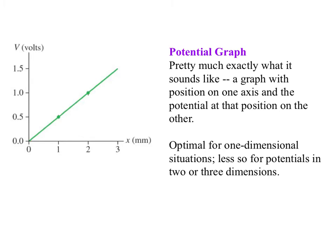A potential graph is pretty much exactly what it sounds like. It's a graph where the position's on one axis and the potential at that position is on the other. These are optimal for one-dimensional cases, like we just had, and less so for potentials in which there are two or three dimensions. Although you could imagine with a two-dimensional potential, if you had variance in x and y, then you could imagine a two-dimensional graph where you would have x on one axis, y on the other axis, and potential on the z axis. And then you could imagine having some more complicated shape that would tell you where your potentials are on that shape. Not fun, not particularly easy to draw, as you can see, but useful.